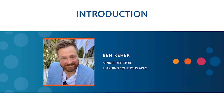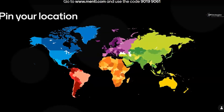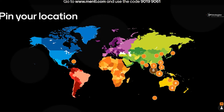Hopefully now you've found menti.com — we're going to be using that throughout. Whenever I come to a poll or an activity, you'll see the instructions come up again so you'll still be able to connect a bit later on. Let's go to our first little interaction right now — I'd like us to tell me where you are in the world. Pin your location, tell us where you are coming from. I imagine a lot of us are in Asia — just drop a little pin and we'll see it all come up.